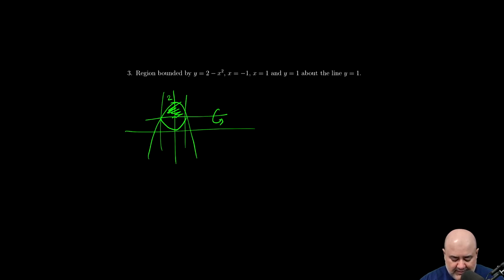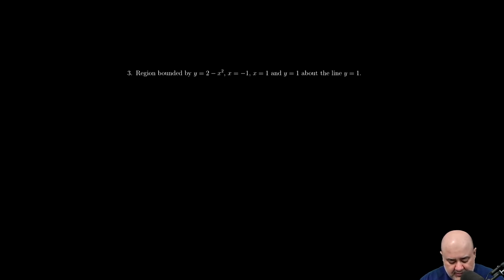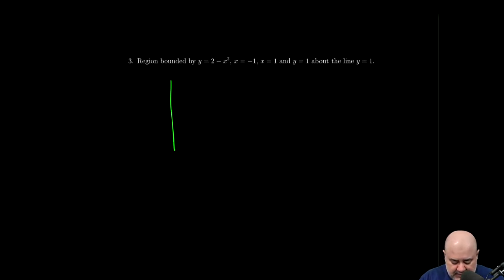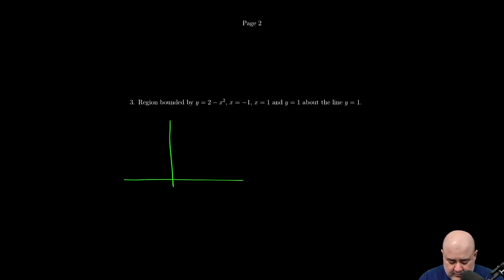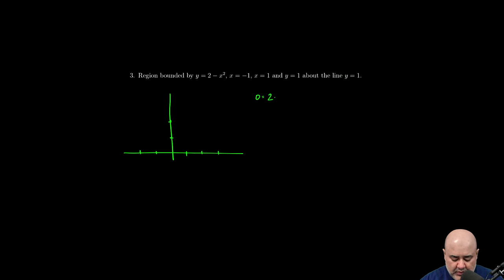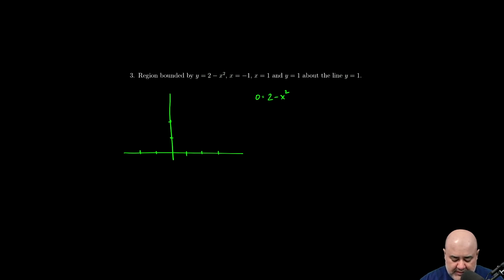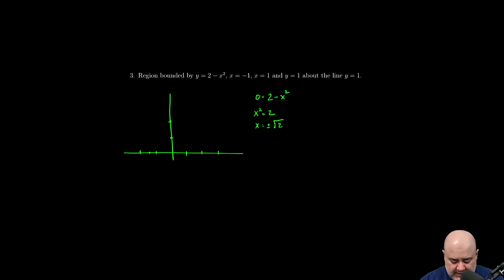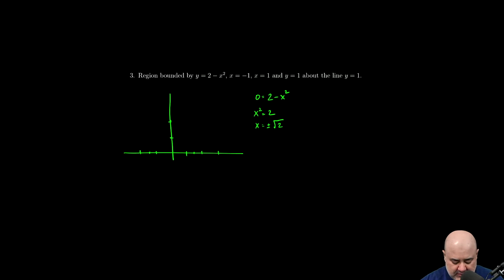The majority of the details are in quadrants 1 and 2, so that's what we need to blow up properly. I know this function crosses the x-axis at the x-intercepts of 2 minus x squared. Setting the function equal to zero: x squared equals 2, so x equals plus or minus root 2. Square root of 2 is about 1.4, so it crosses the x-axis around there on both sides.